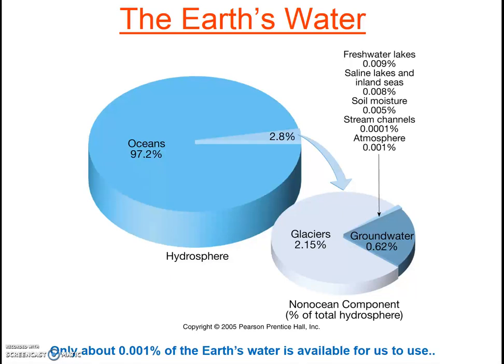So where is the Earth's water? Check out this diagram. Over 97% of the Earth's water is in the oceans. It's salty, not particularly useful for most human uses.